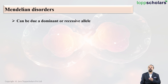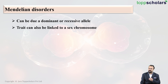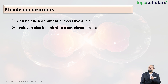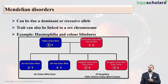Now let us talk about Mendelian disorders in detail. They can occur due to a dominant or a recessive allele. The trait can also be linked to a sex chromosome, meaning the faulty gene responsible for causing the disease can be present on the sex chromosome. Examples include Haemophilia and color blindness.